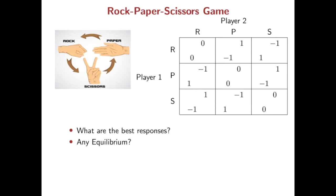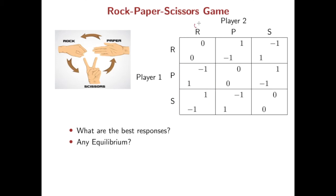Then, as in video 2, you may want to find a Nash equilibrium by checking players' best responses. So, your best response against your opponent: